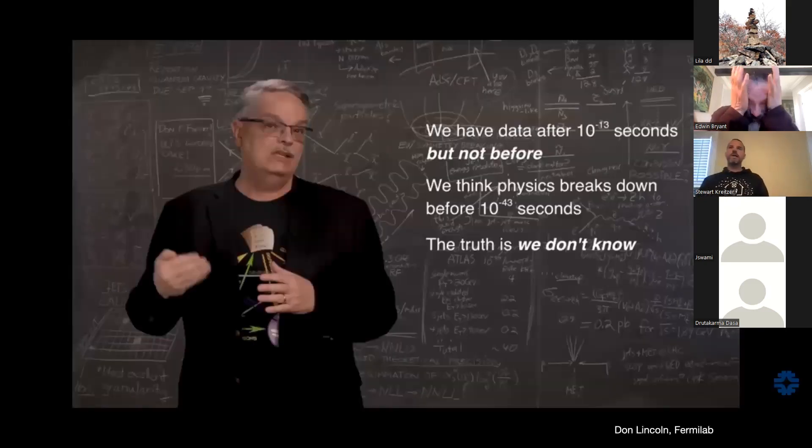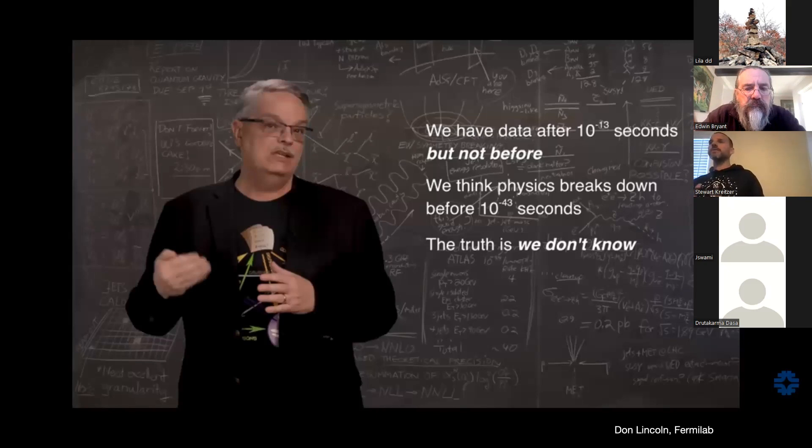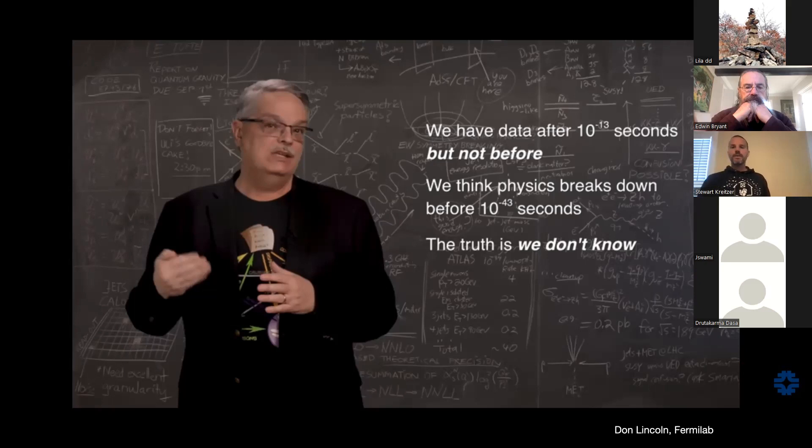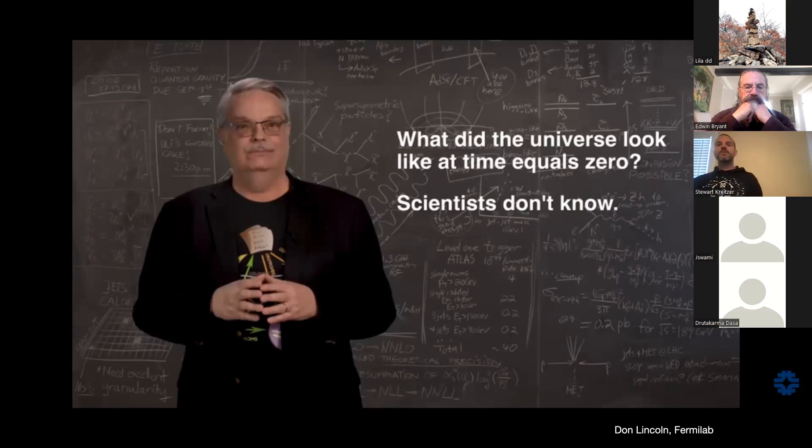So here's a guy I really respect and like, Don Lincoln. He worked down the road from me at Fermilab when I was at Chicago. He's got some great YouTube videos that I suggest you watch if you just want popular cosmology videos that are easily digestible. Here is a prominent physicist admitting exactly what we're talking about. He says we have data after about 10 to the minus 13 seconds after this so-called singular event, but nothing before. And we think that physics breaks down at around a certain time. So the truth is, he's being honest, we don't know. We don't know what happens at pre-Big Bang. So what does the universe look like at time equals zero? These are his words, not mine. The scientists don't know. And they're very forward in saying that. Not all of them.